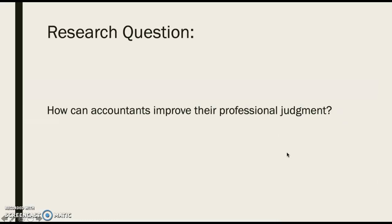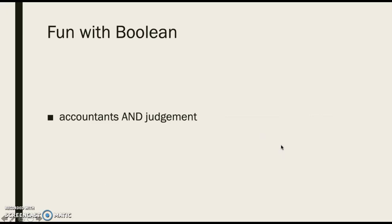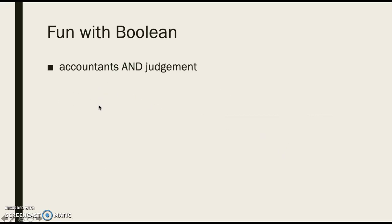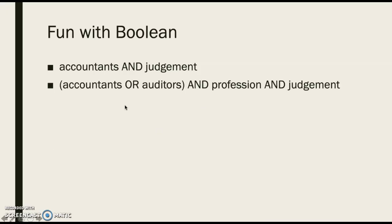Here's our research question: How can accountants improve their professional judgment? When you come in to a research project, you usually have a question. The important thing is to turn it into a keyword search — pull out the most important concepts and think about how you would structure just a keyword search around the main concepts. Starting very broad, I need 'accountants' and I need 'judgment.' This is going to give you a lot of results, so you'll want to think of ways to modify the search to get fewer or more accurate results.